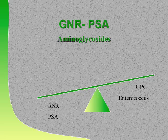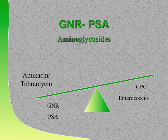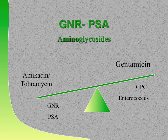What aminoglycoside has the best coverage of enterococcus—amikacin, tobramycin, or gentamicin? The best aminoglycoside for enterococcus is gentamicin. As you develop gram-positive coverage, you lose gram-negative coverage. Remember: amikacin and tobramycin are better for Pseudomonas; gentamicin is better for enterococcus.